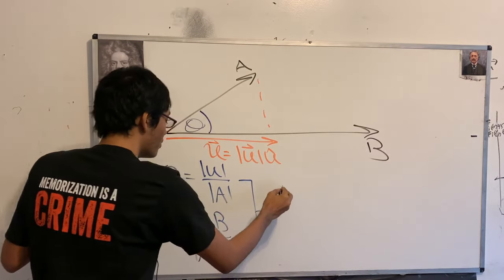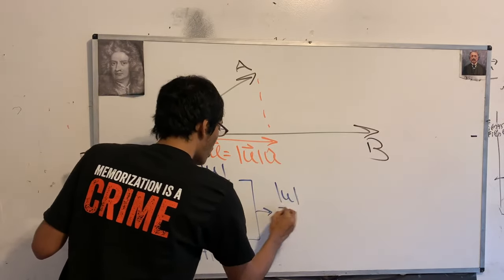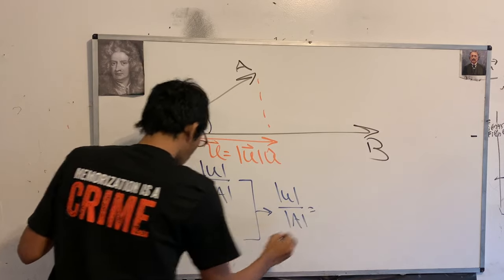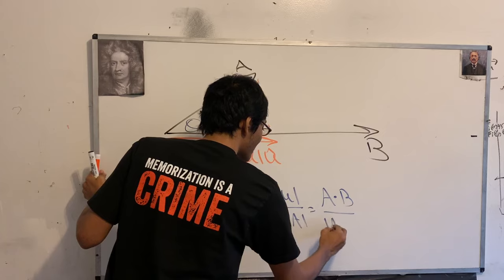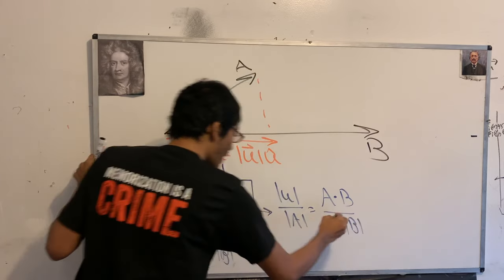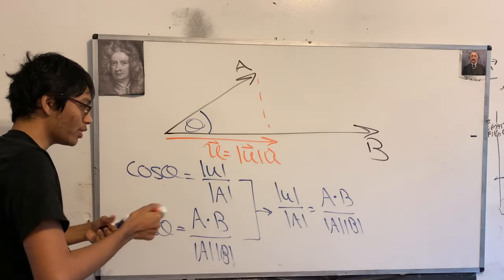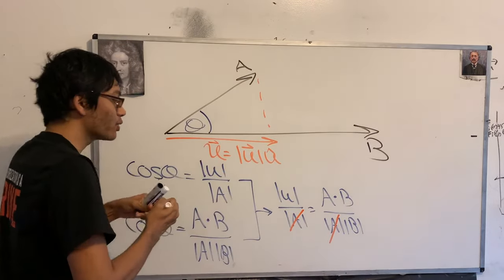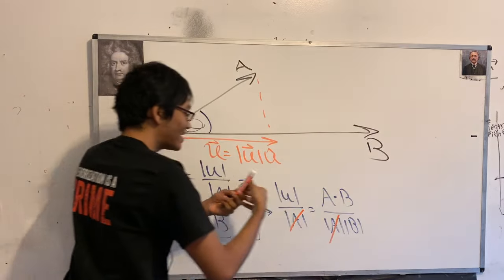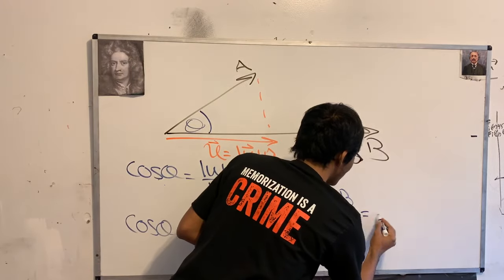Set these two things equal to each other. What do you get? Well, you're going to get the magnitude of U over the magnitude of A is equal to A dot B over the magnitude of A times the magnitude of B. And we're almost there, ladies and gentlemen. These two guys drop out, they cancel out. And so we're left with the magnitude of U, which is A dot B over the magnitude of B.